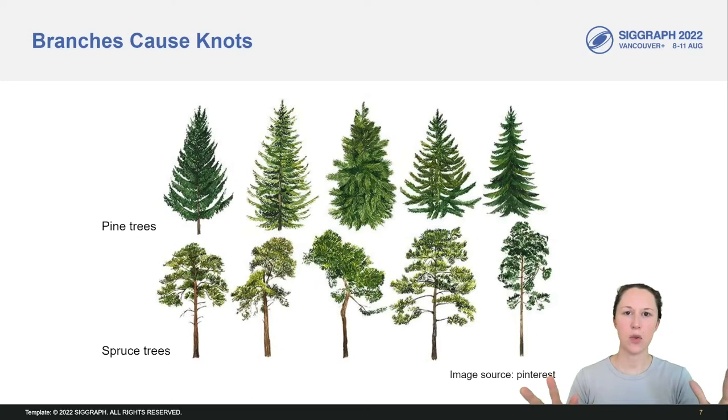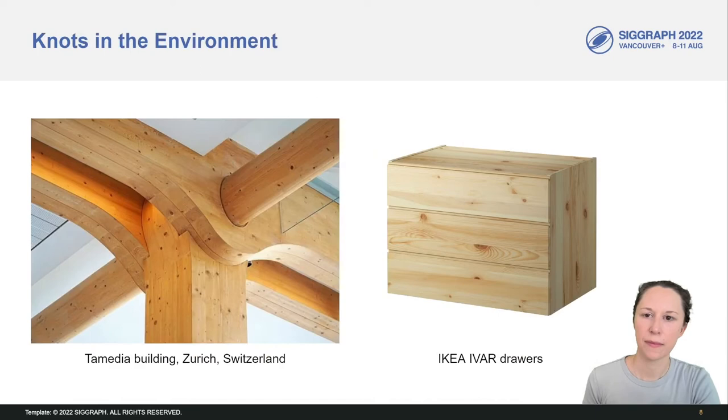Knots are caused by branches that grow out from the stem of a tree, which causes internal deformations inside the wood. Knots are particularly common to softwoods such as pine and spruce, because these trees tend to have a long, thick stem with many small branches. But knots also exist in hardwoods like oak. They appear on surfaces of unpainted wood in our environment, such as structural building members and furniture.